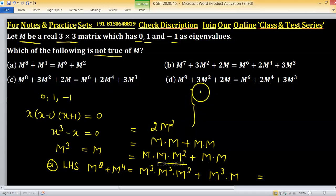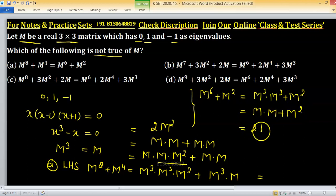The right hand side is M⁶ plus M². I can write M³ times M³ plus M². Now replace M³ with M, so M times M plus M², and again we are getting 2M².